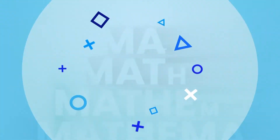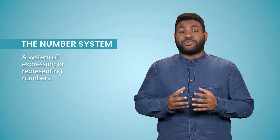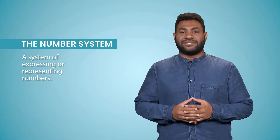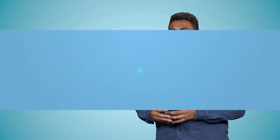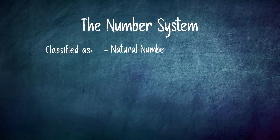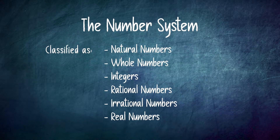In this first section, we're going to understand the number system. The number system is a system of expressing or representing numbers. The number system is classified as natural numbers, whole numbers, integers, rational numbers, irrational numbers, and real numbers. We will be understanding each one of them.